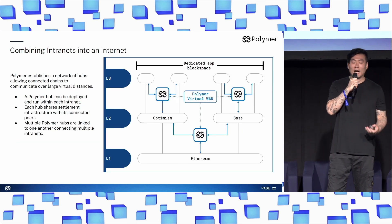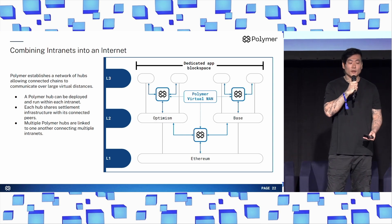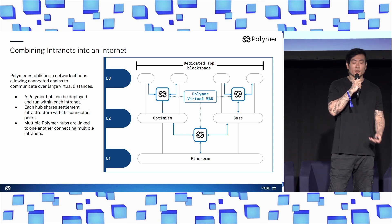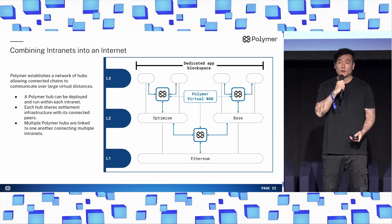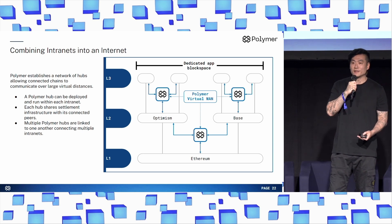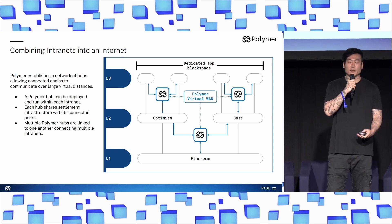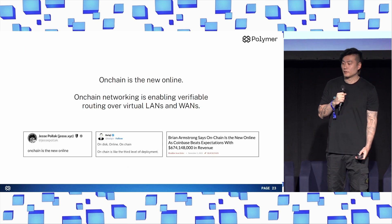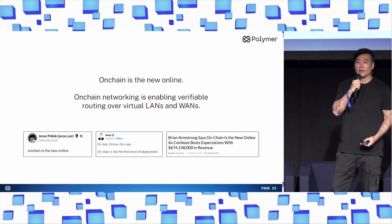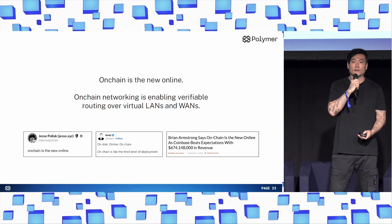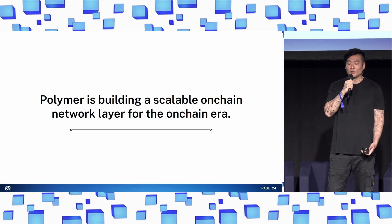Polymer leverages these IBC building blocks to create a virtual WAN over the virtual LANs on Ethereum. A Polymer hub can be deployed and run within each intranet on Ethereum, sharing the settlement infrastructure with its connected peers. Multiple Polymer hubs can then be interconnected together, combining these virtual intranets into a verifiable internet. On-chain is the new online, and on-chain networking is enabling verifiable routing over virtual LANs and WANs. Polymer is building a scalable on-chain network layer for the on-chain era.